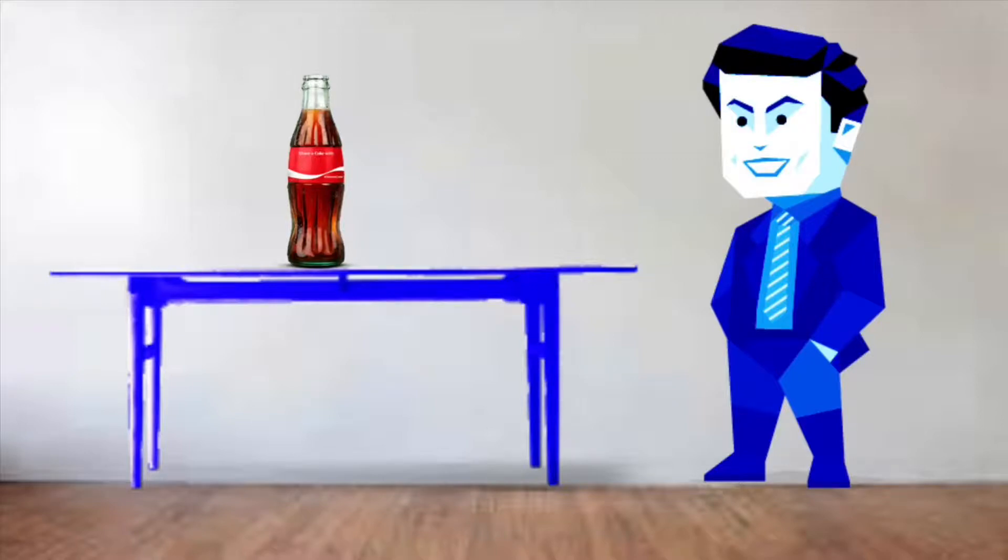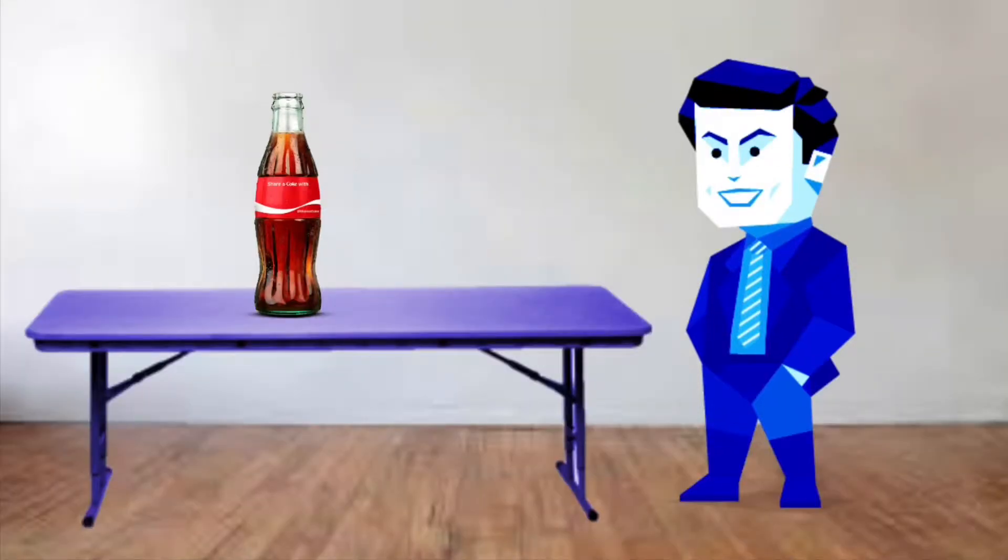But the horizon line rule also applies to indoor scenes. For example, the line between the wall and the floor. Notice in this example, all of the subjects are resting on the line. The feet, the legs of the table, the bottle of coke, all resting on the horizon line. When they should rest below it, like this, it's a much more natural look. Notice the feet, the table legs, even the bottle of coke are now resting below that indoor horizon line.